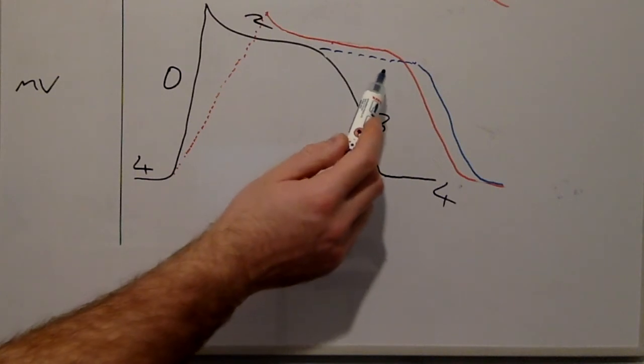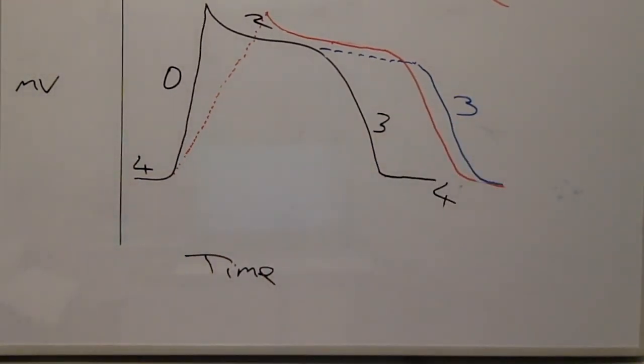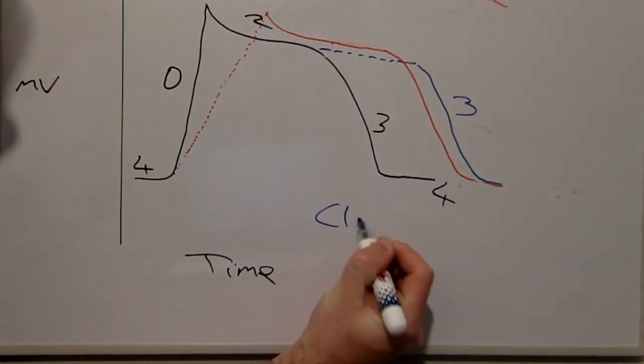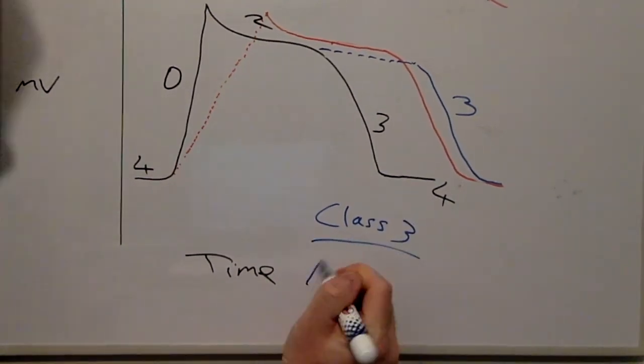As we see here, phase 3 occurs later when a class 3 anti-arrhythmic is used because potassium channels have been blocked during phase 2. An example of a class 3 Vaughan-Williams medication is amiodarone.